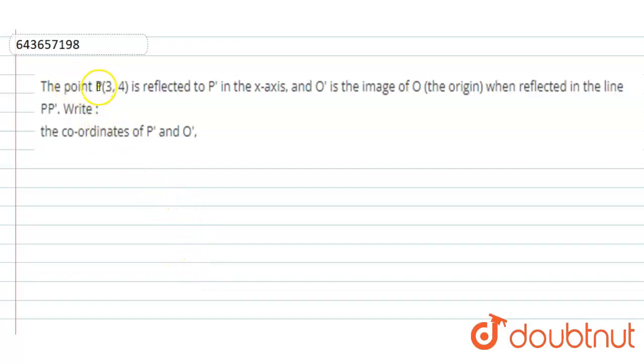Hello everyone, our question is: the point P(3,4) is reflected to P' in the x-axis, and O' is the image of O (the origin) when reflected in the line PP'. Write the coordinates of P' and O'. In this question, the coordinates of P and O are given to us and we need to find the coordinates of P' and O'.